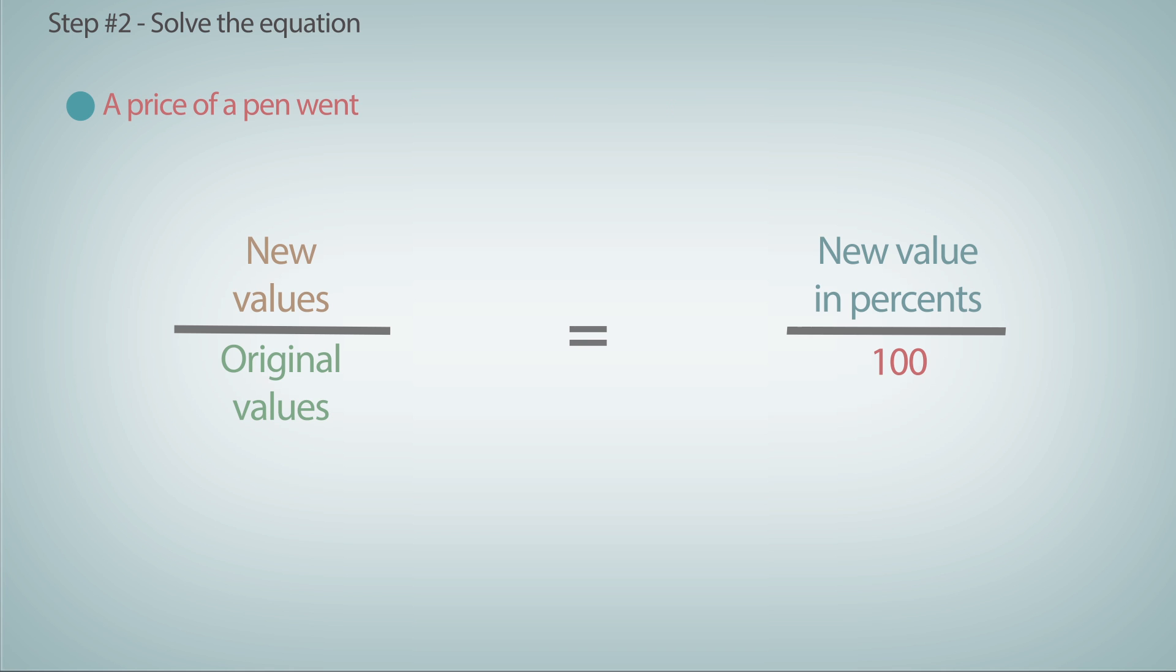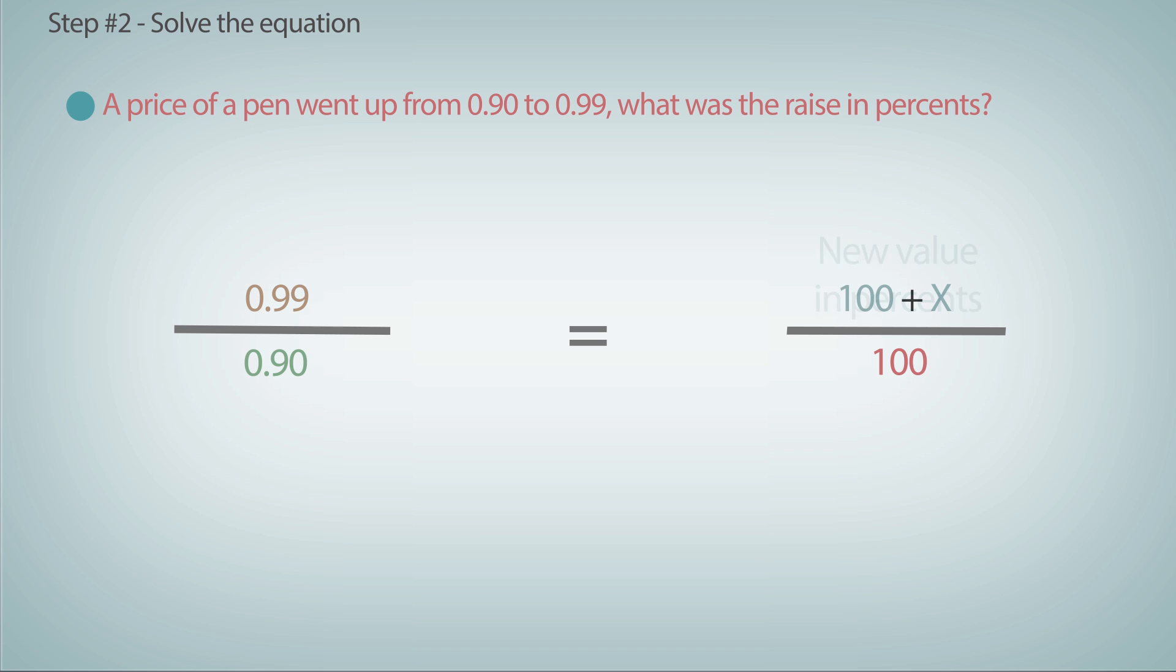This basic equation can be used for different phrasings of the question. In this case, we have the original price and the new price. What we're missing is the new amount in percentages. That's where we'll put an x. To continue solving this equation, follow the animation. The price went up by 10%.